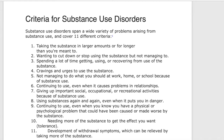Additional criteria include giving up important social, occupational, or recreational activities because of substance use, and using substances again and again even when it puts you in danger — for example, stimulants can make someone more impulsive. Another criterion is continuing to use even when you know you have a physical or psychological problem that could have been caused or made worse by the substance, which is particularly relevant for those with co-occurring disorders.